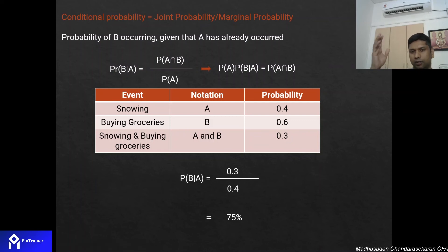75% is different than just going out and buying grocery which is 60%, so slightly higher. In the Rohit Sharma example as well, when he has scored a century India winning is 80% whereas generally India wins 75% of the time. This is conditional probability.